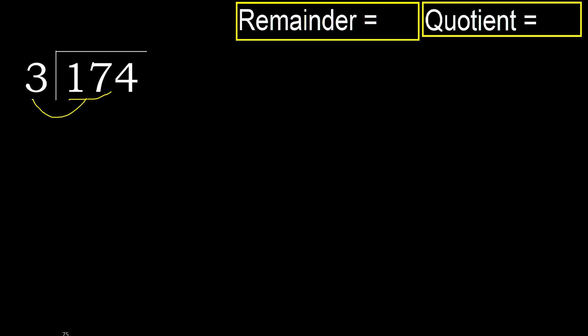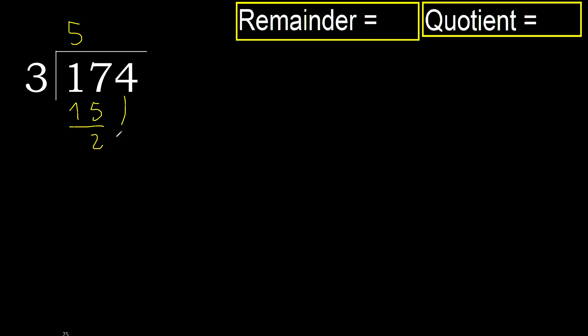3 multiplied by 6 is 18 — 18 is greater. 3 multiplied by 5 is 15. 15 is not greater, so subtract: remainder is 2. Next digit.